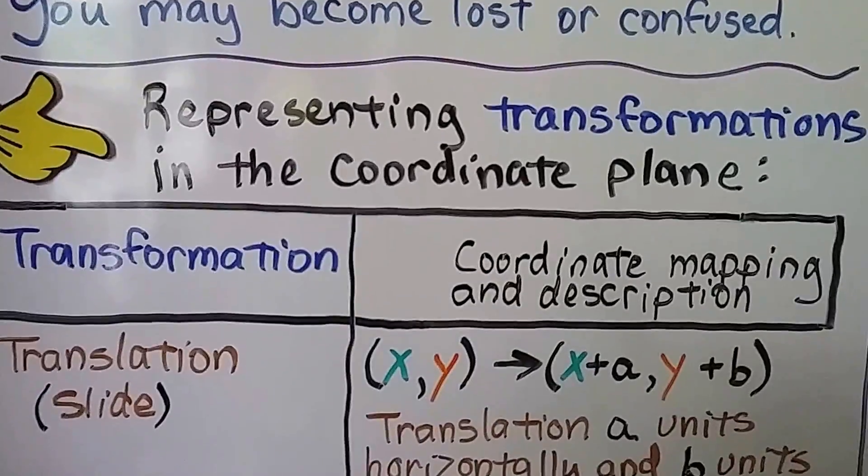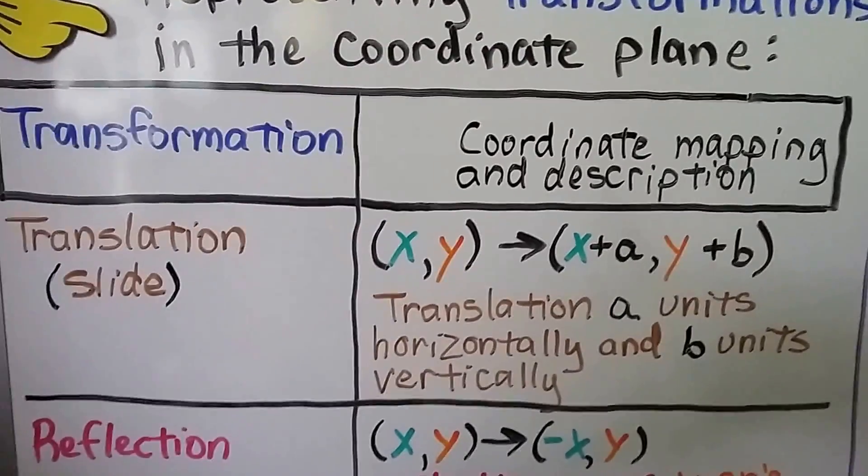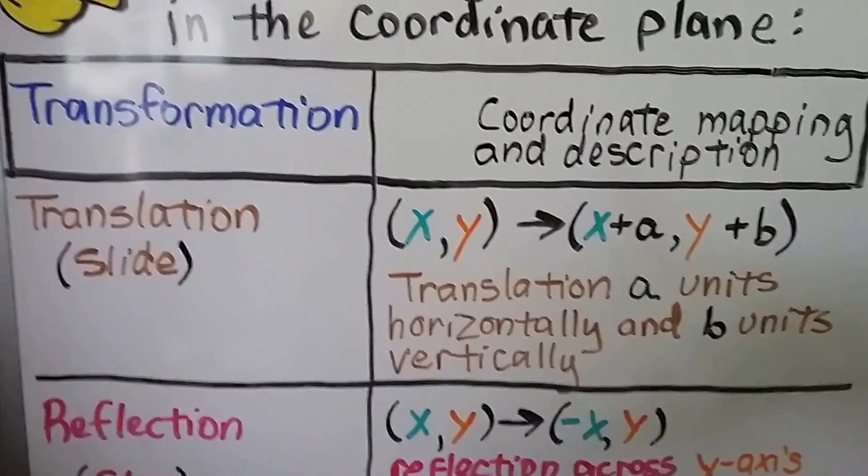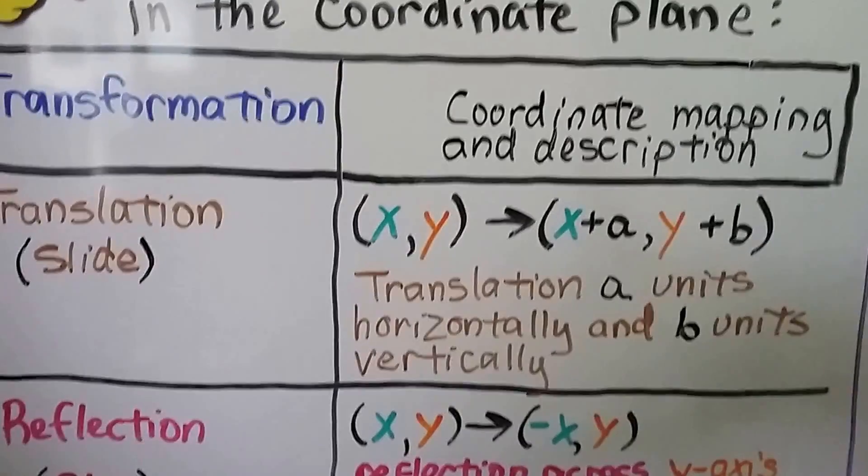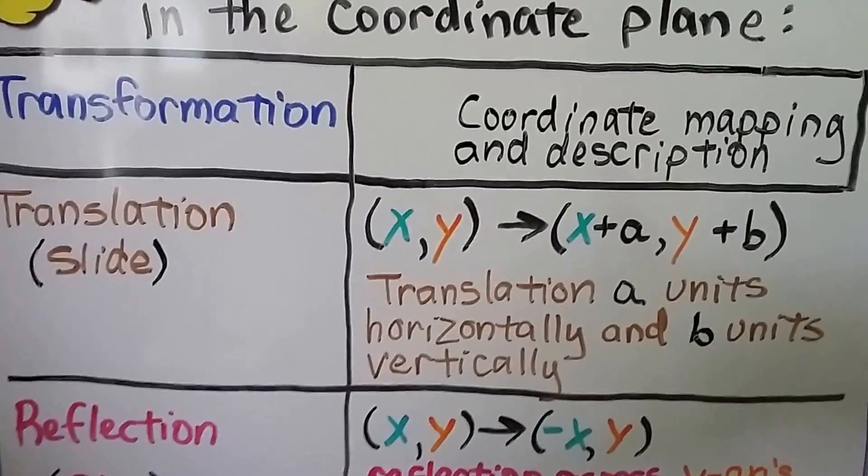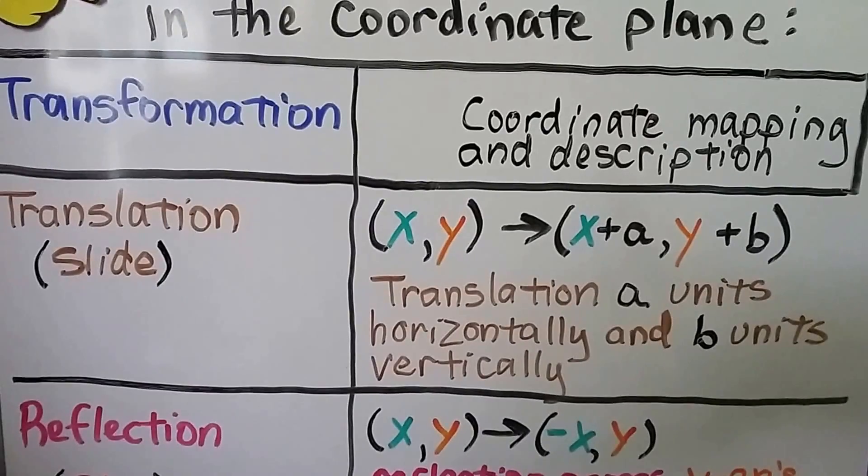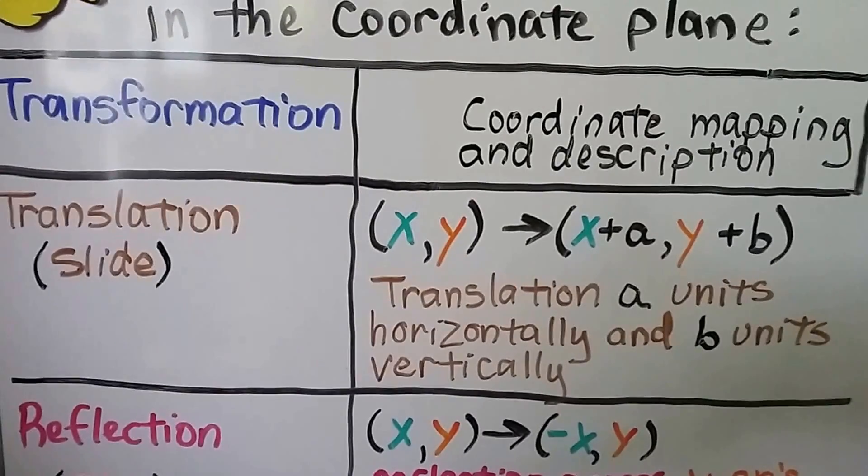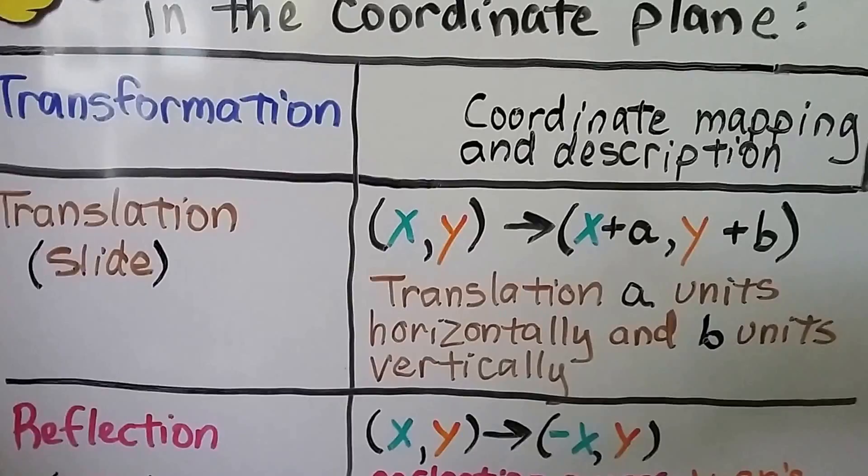So representing transformations in the coordinate plane, we have a bunch of transformations and we have coordinate mapping and description. A translation is a slide. So x, y would map to x plus a and y plus b. And the translation, a units horizontally and b units vertically.